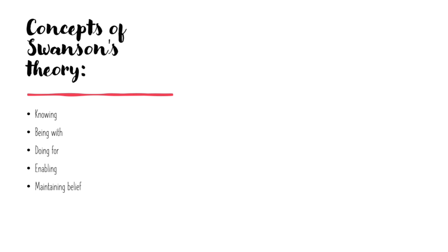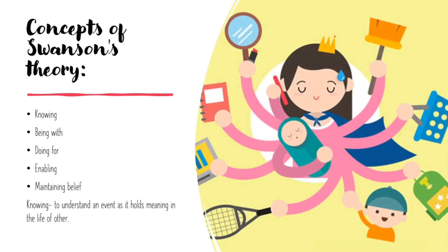We will further go into details about each one of the concepts and have a look at those sub-dimensions. Our first concept is Knowing. Knowing means to understand an event as it holds meaning in the life of another. We have to listen to our client and perceive the meaning of a particular event in the same way as the client is trying to intend. In order to know the problem properly, we have to concentrate on the sub-dimensions.